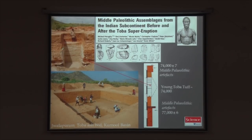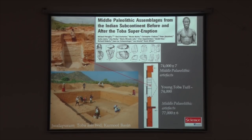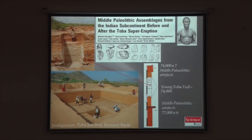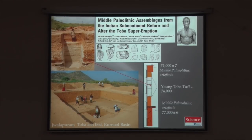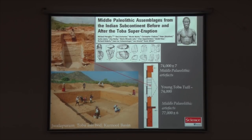The site of Jwalapuram in the Kurnool Basin has the thickest volcanic ash deposit preserved anywhere in India, securely dated to 74,000 years ago. Below the ash, there is a Middle Paleolithic site preserved — comparable to what we see at Athirampakam — and the industry continues even after the ash fall. This area also has a large number of rock shelters with paintings in an area of 2,000 acres, with 200 rock shelters, and we are very sure these paintings also go back to the later Pleistocene.